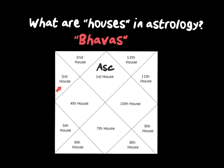The second house is your money. The third house is your siblings. The fourth house is your mother and your domestic situation. When you add all of these houses together, there is so much depth of meaning. There is nothing you could experience on this earth, nothing you could think, feel, or even dream about that would not be given some meaning in one of these houses.